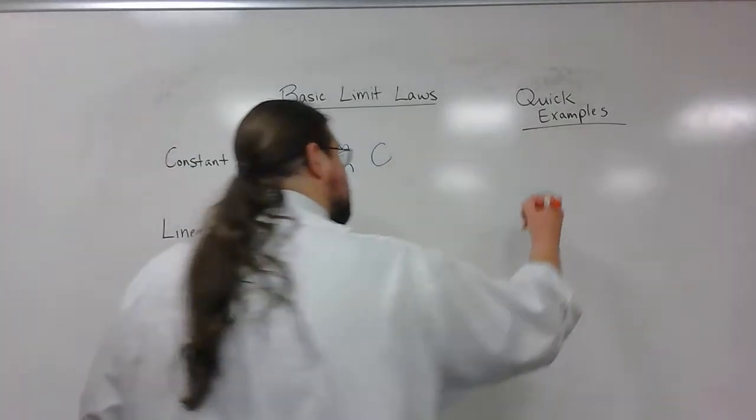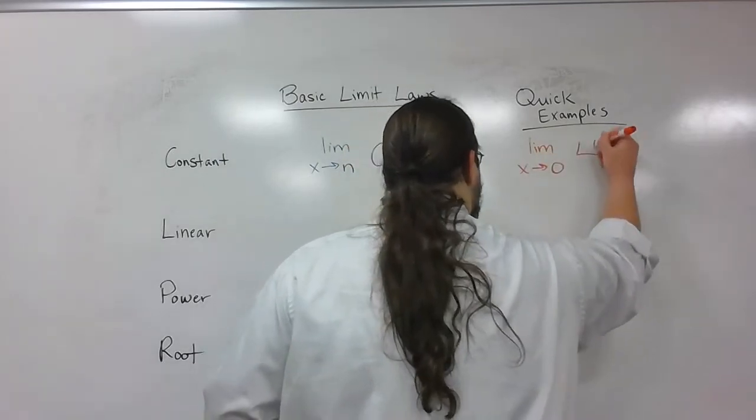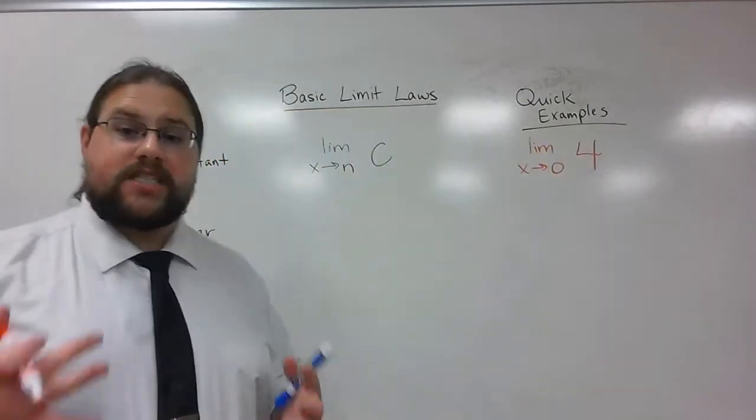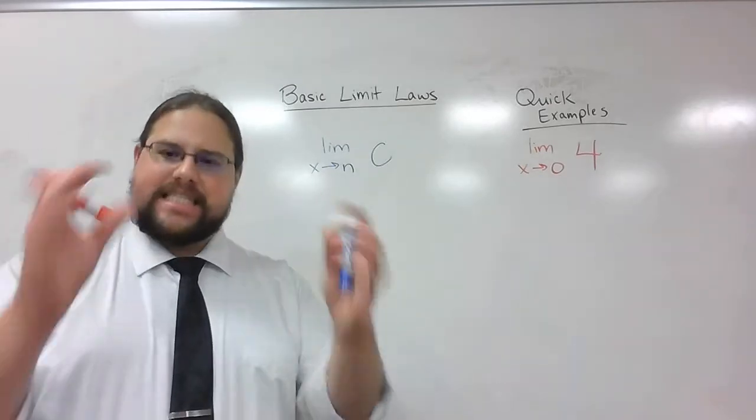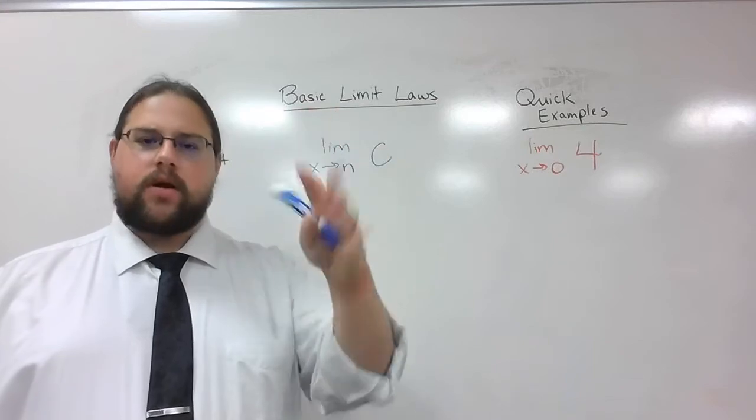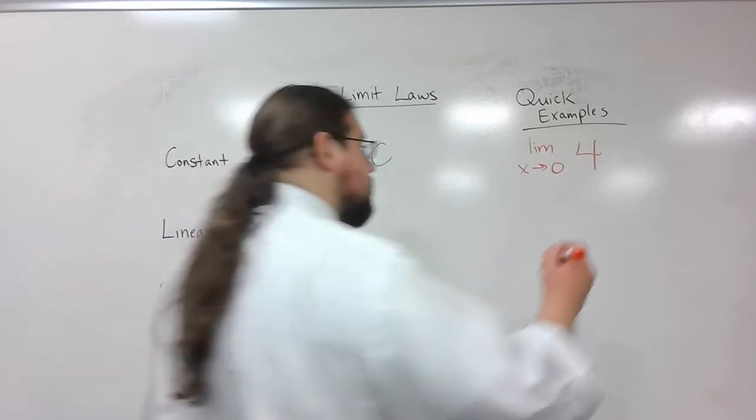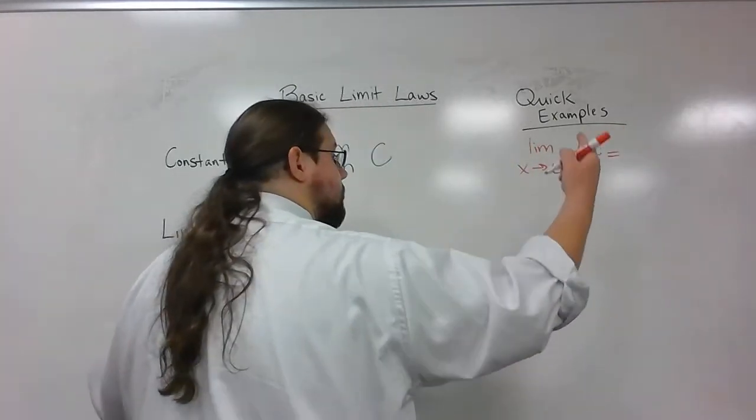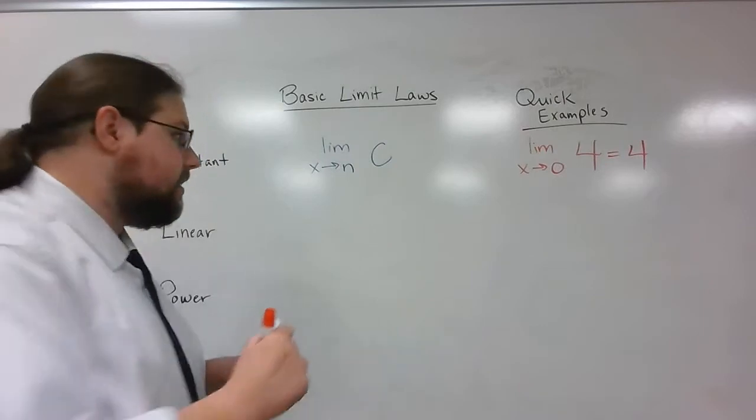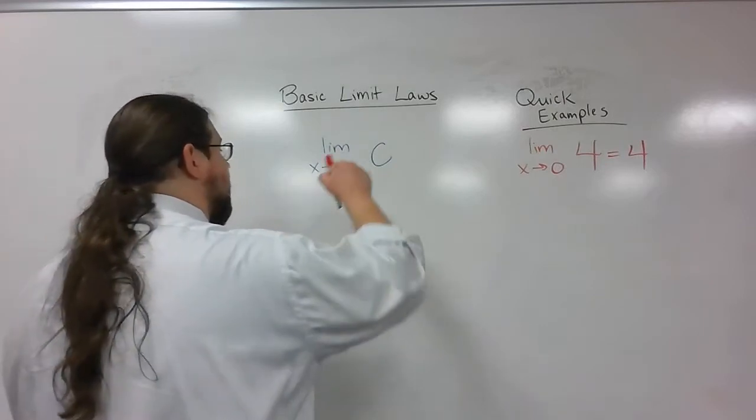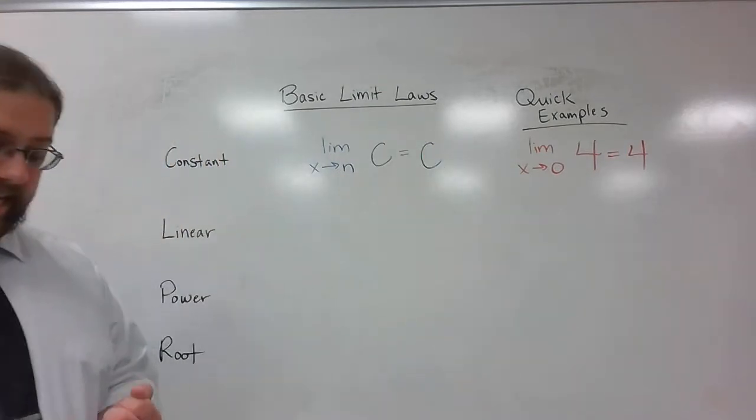Let me give you a brief example. If I am trying to find the limit as x approaches 0 of 4, that means my function's value is always 4. No matter what, you could plug in any number and you would always get the exact same answer, and it's always 4. Well, guess what happens as you take the limit? It's just going to be whatever that number is. If I'm trying to find the limit as x approaches n of some constant, it's just going to be whatever that constant is.